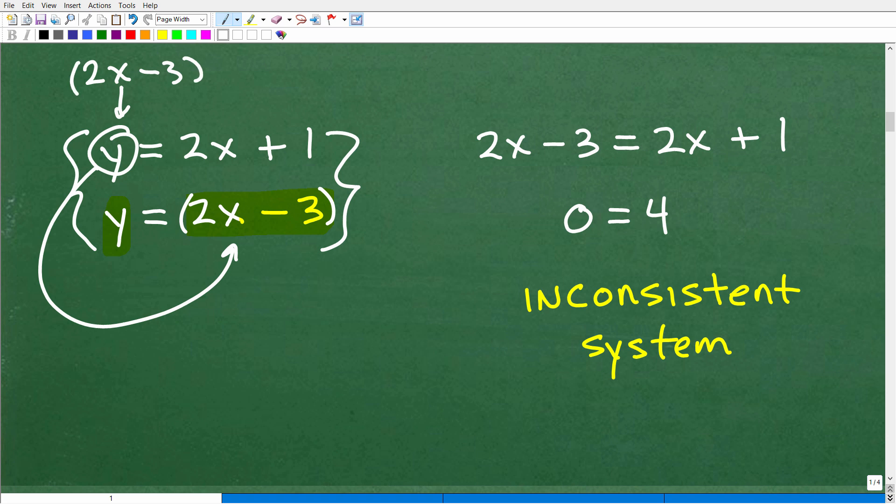So, let's try to solve this algebraically. So, let's replace this Y with 2X minus 3. So, you end up with 2X minus 3 is equal to 2X plus 1. Let's try to solve this equation.